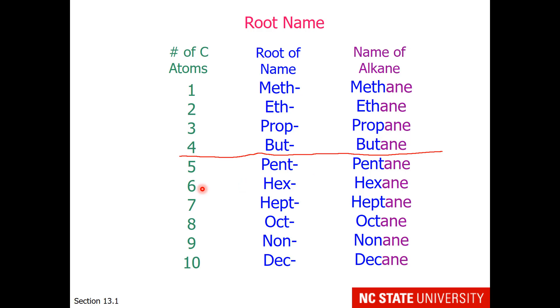For 6 carbons we have 'hex', for 7 we have 'hept', for 8 we have 'oct', for 9 we have 'non', and for 10 we have 'dec' as the root.